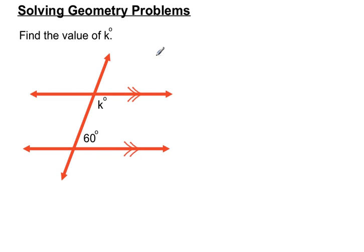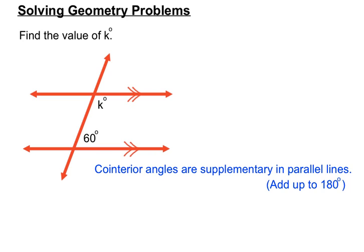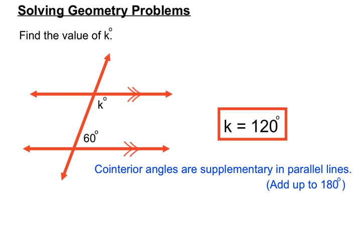Now these are in co-interior positions — this one's together inside with this one. We'll make sure we've got different symbols there. These aren't equal to each other, so our other scenario is that they add up to 180 degrees. Co-interior angles are supplementary — a fancy name for adding up to 180 degrees. We do 180 minus 60 and K will equal 120 degrees, based on co-interior angles adding up to 180 degrees in parallel lines.